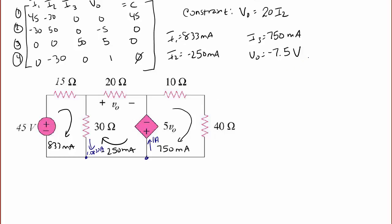Let's talk about the dependent source. We found that V0 was equal to negative 7.5 volts, which makes sense because we have negative 250 milliamps flowing in from the left. So although 5V0 is drawn to be positive on the bottom, negative on the top, the actual voltage is positive on the top, negative on the bottom, and it has a value of 5 times 7.5 — so it is 37.5 volts. This shows us that both of our sources are actually delivering power. The 45 volts power is 45 times 833 milliamps, and the dependent source's power is 37.5 times 1.